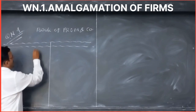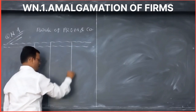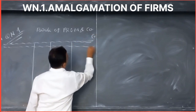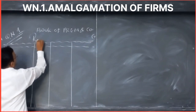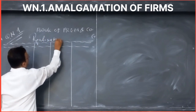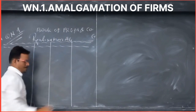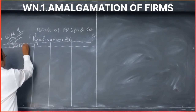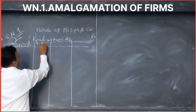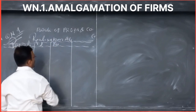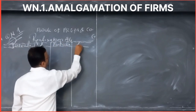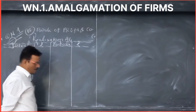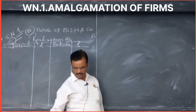We have a debit side and a credit side. This is the realization account in the books of Prem. Debit side: date, particular, rupees. Credit side: date, particular, rupees. First format is for 15 lines. Second format will be the partners' capital account on the credit side.